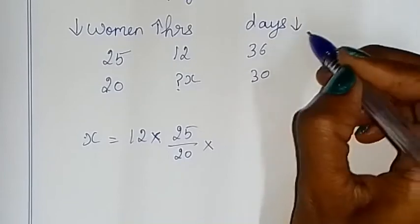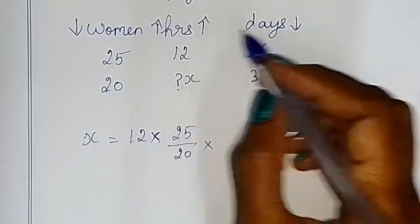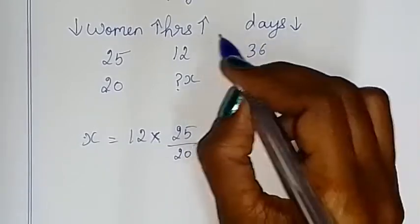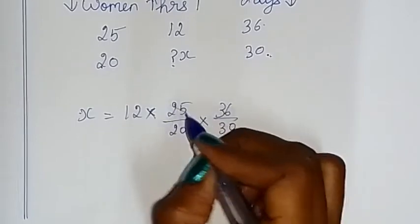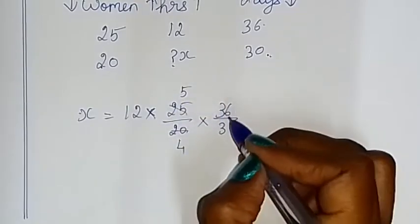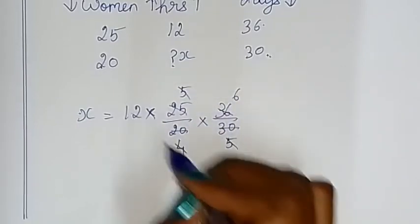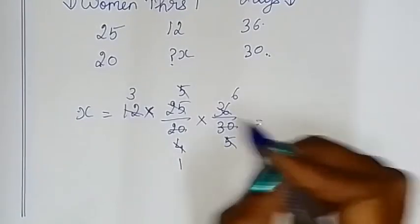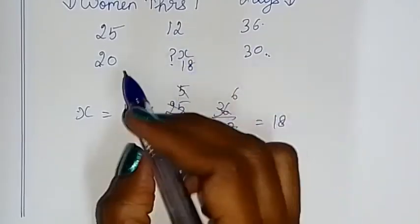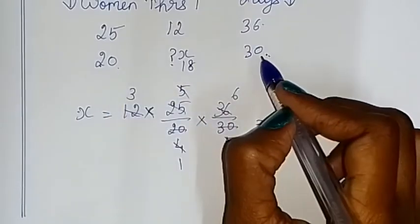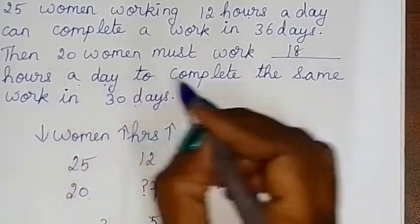The number of days changes. Work is complete. You can apply hours to increase or to complete. This is inverse proportion — inverse proportion means no change in total work. The rate is 36 by 30. Now solve it: 1 piece of work is 1. The number of days simplifies to 15 and 3. We apply hours: 20 women change 30 days, and the work is complete — so 20 women must work 18 hours a day to complete the same work in 30 days.